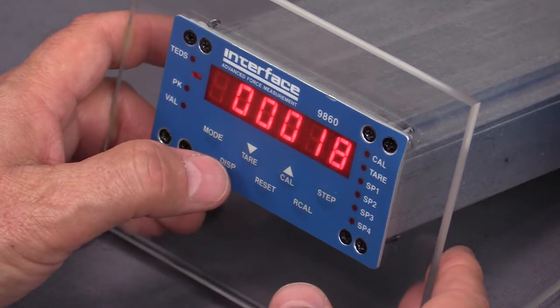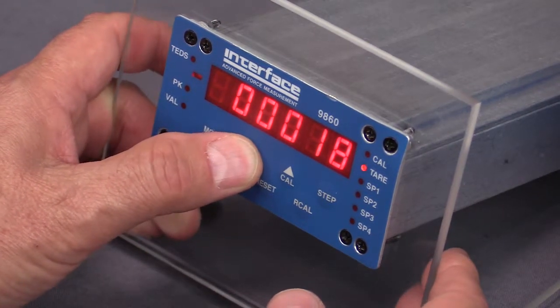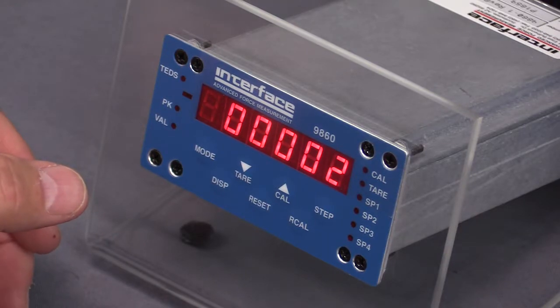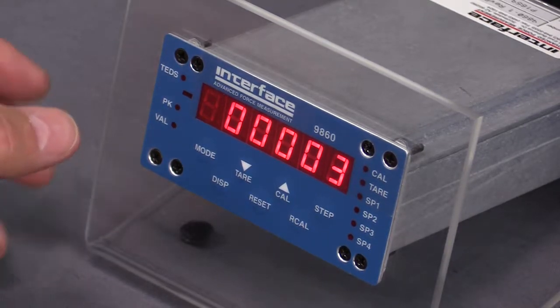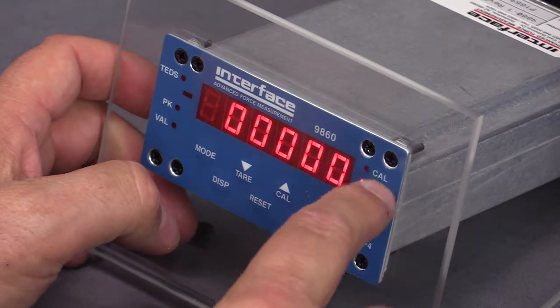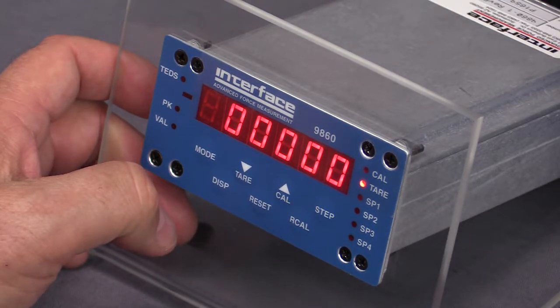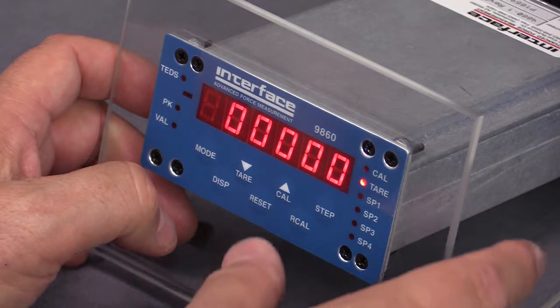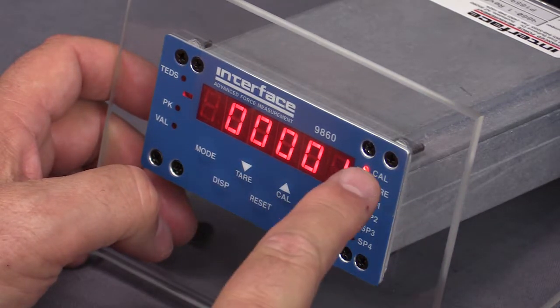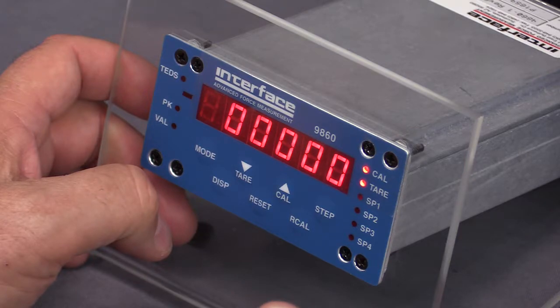Now we're going to do the actual calibration. The first thing we're going to do is press the tear button. When we do that, tear illuminates and the display goes to zero. The next thing we're going to do is press the cal button. The cal light comes on and now we've entered into the cal mode. We're ready now to apply our load. We're going to do that by using the CX transfer box.